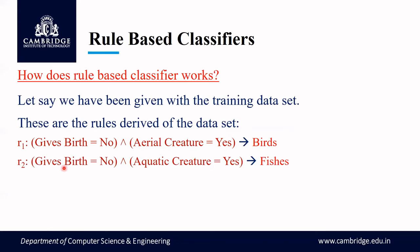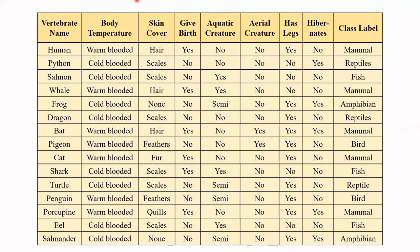Rule 2: if 'gives birth' equals No AND 'aquatic creature' equals Yes, then class label is Fish. Checking the dataset — we find two records where gives birth is No and aquatic creature is Yes, and both have the class label Fish. So Rule 2 also has valid coverage.